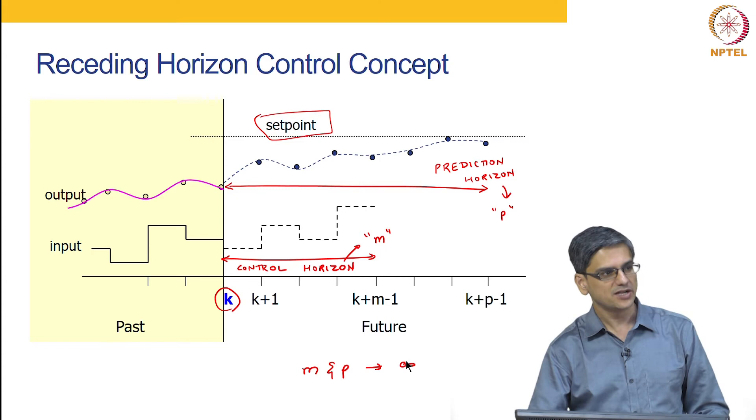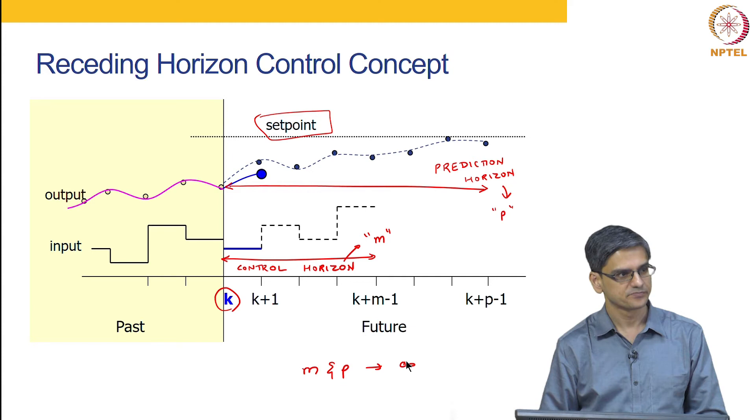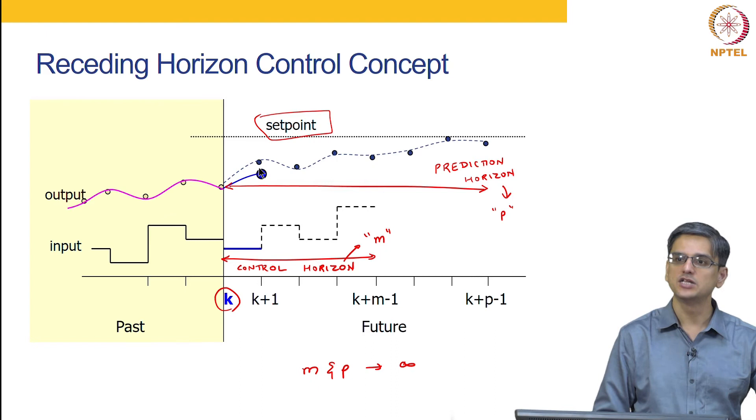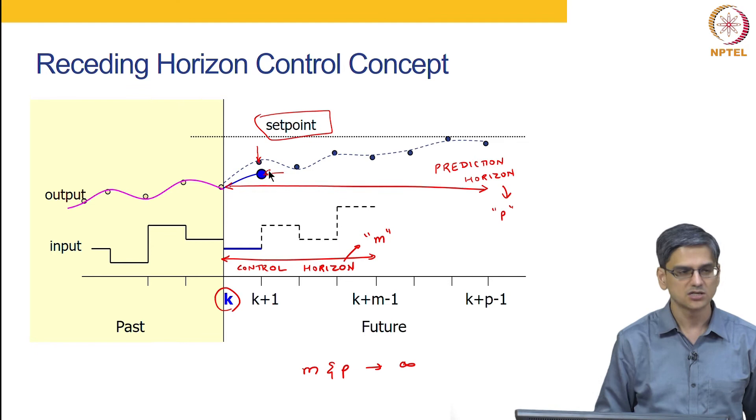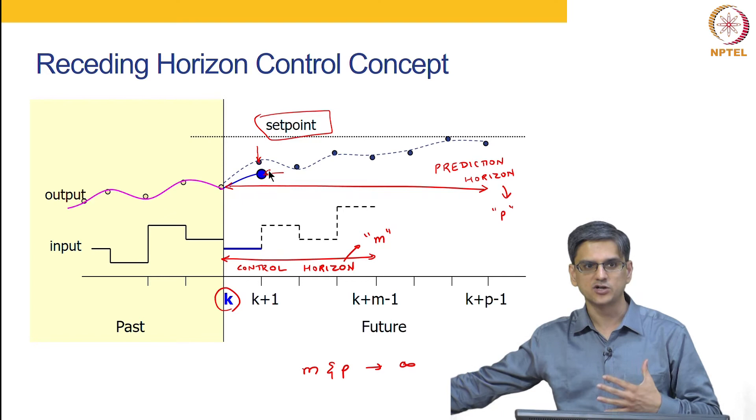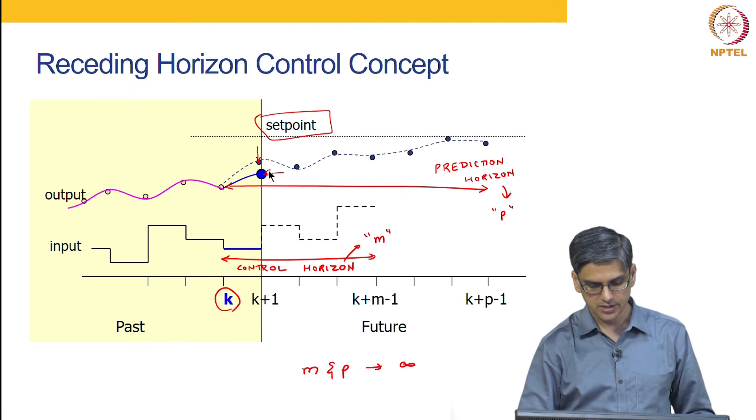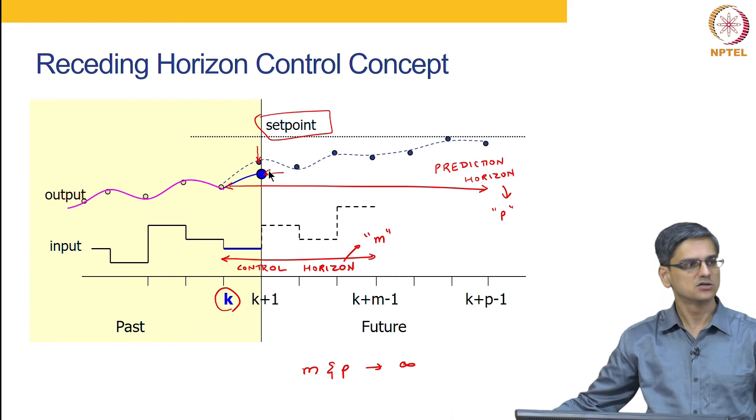So now you determine what is the best control action. You are only going to implement the current control action. Now when you implement the current control action, we know that the model is not perfect, it is not perfect representation of the system. So instead of this system going on to the predicted point, it has gone on to another point which is close to that predicted point, but not exactly the same as the predicted point. So we cannot implement the entire M set of control moves right now. So we will only implement one control move. And at the next time instant, repeat this entire process.